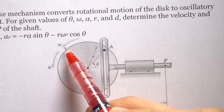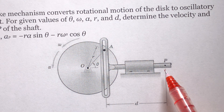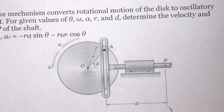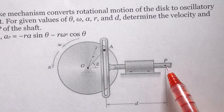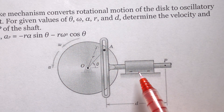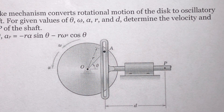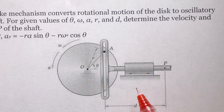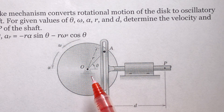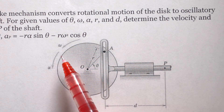Now the question is, if you know omega, alpha, and theta, what's going to be the velocity and acceleration of point P on this shaft? We need to find a relationship between the position of P and theta. If I find a geometric relationship between them and write it down as a mathematical equation, I can take a derivative to find the relationship between theta dot and the velocity of P. Theta dot means omega.